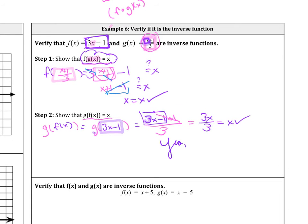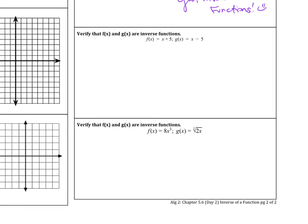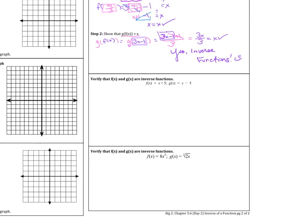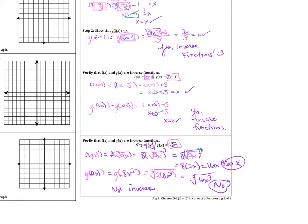So these are yes, inverse functions. In order for it to work, both have to work — f(g(x)) and g(f(x)) both have to equal x. Go ahead and try the examples below. One of them is a yes and one of them is a no.